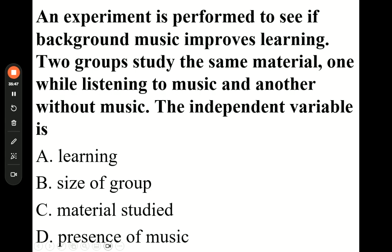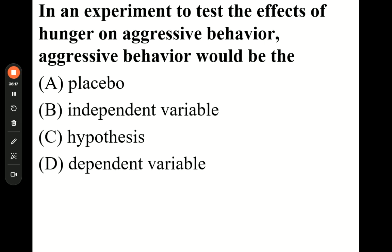Multiple choice review: An experiment is performed to see if background music improves learning. Remember, the independent variable is what one group gets that the other doesn't — the answer is the presence of music. In an experiment to test the effects of hunger on aggressive behavior, aggressive behavior would be the dependent variable — what you are measuring. Hunger would be the independent variable. Does the independent variable cause the dependent variable?